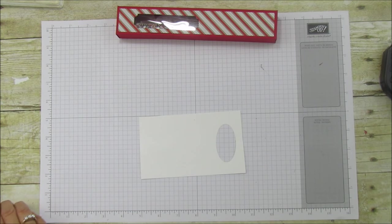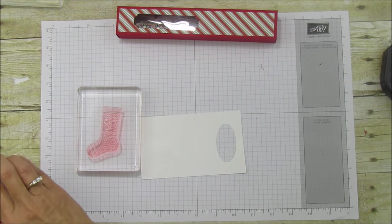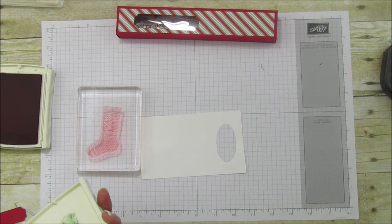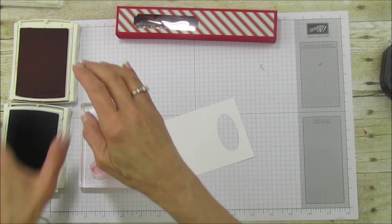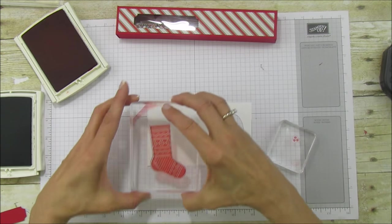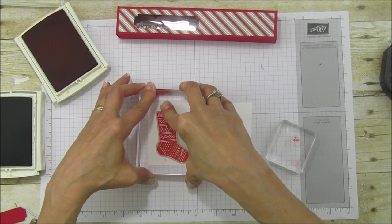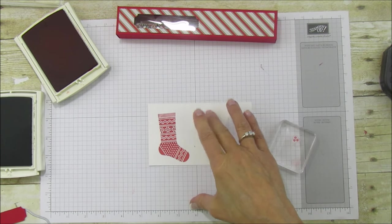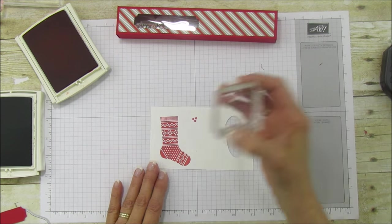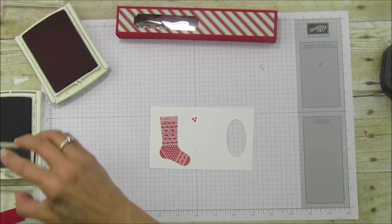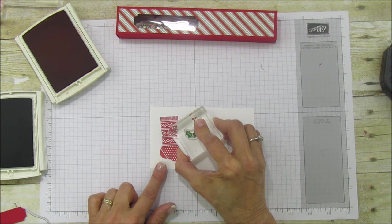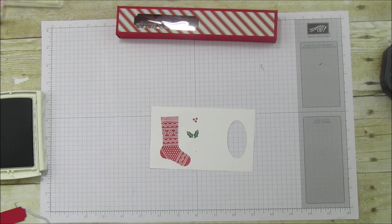Let's go ahead and stamp our stocking and I'm going to use some real red and then I'm going to use some garden green for my little holly. We're going to stamp them all and send them all through the big shot at the same time. We'll ink up our stocking, stamp that, this is such a cute stocking. Then our berries and then we'll use our garden green for the holly.